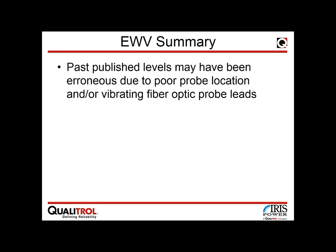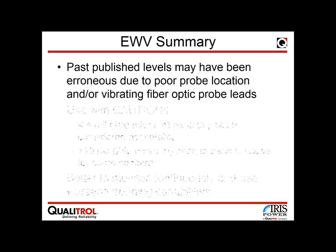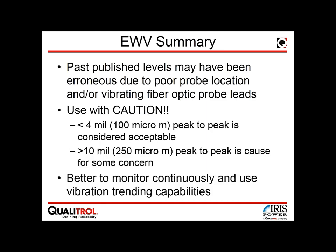Sensors have traditionally been placed on convenient rather than optimal locations, so monitored levels may not reflect actual machine conditions. Guidelines in North America indicate machines should operate at less than 100 micrometers or 4 mils of displacement. If displacement exceeds 10 mils or 250 micrometers, something is moving more than it should. Continuous monitoring is better than periodic inspection, since a periodic approach cannot capture numbers when the machine is hot and at full load.